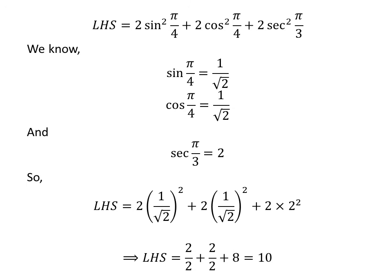Since the square of 1 upon square root of 2 is equal to one half, and 2 times square of 2 is equal to 8, the left hand side equals 2 upon 2 plus 2 upon 2 plus 8, which equals 10. As 10 is the right hand side of the given equation, we have proved the given equation.